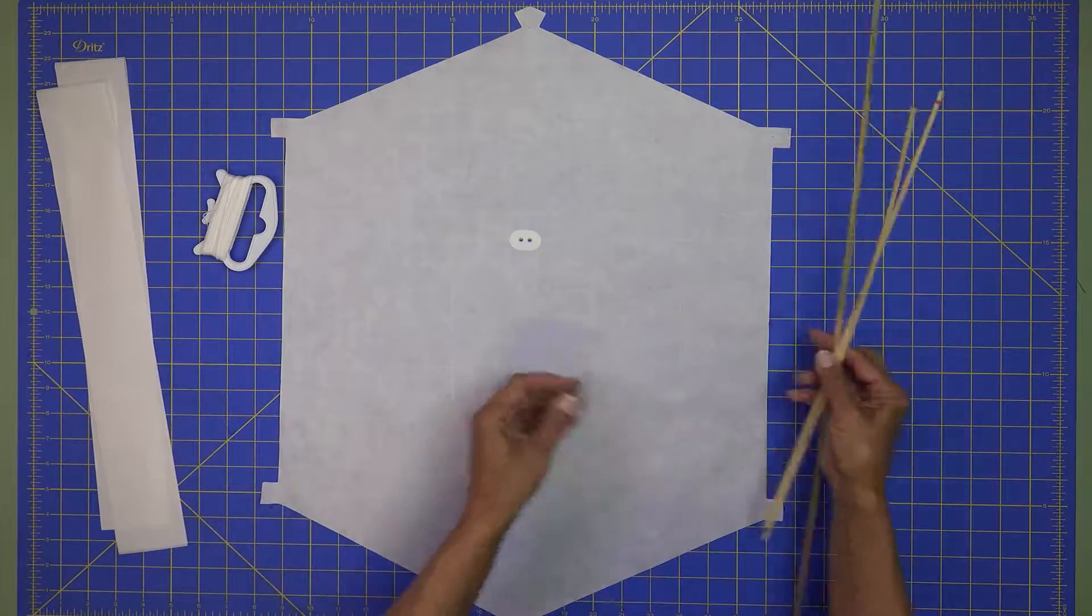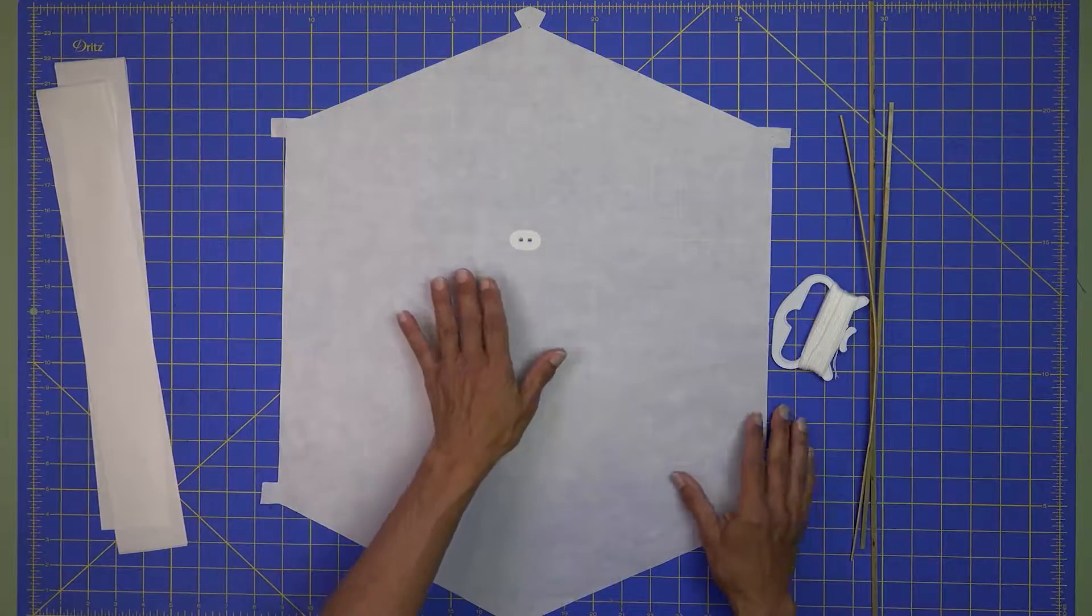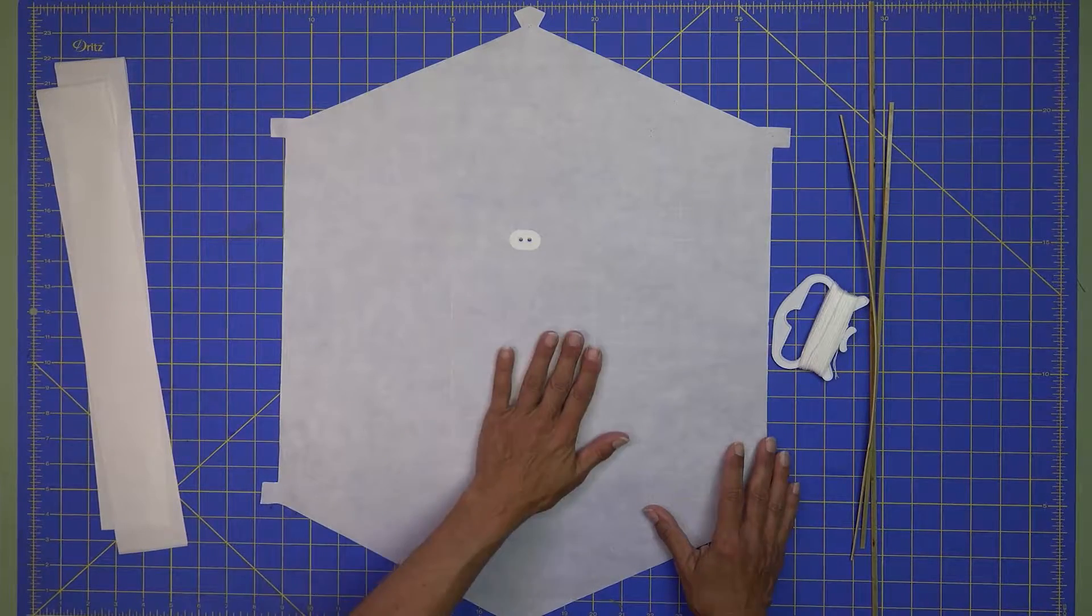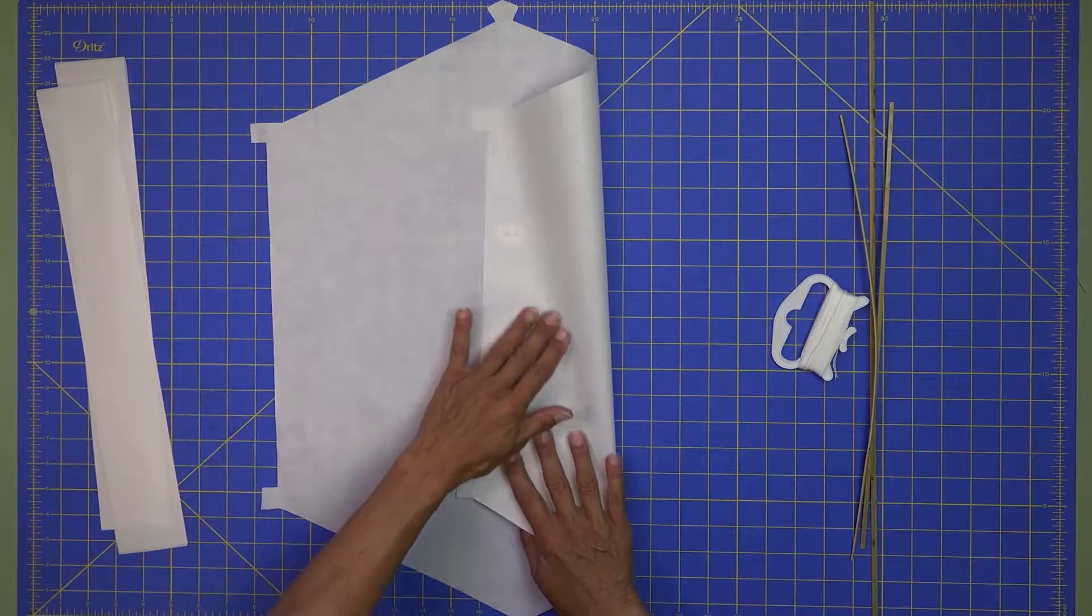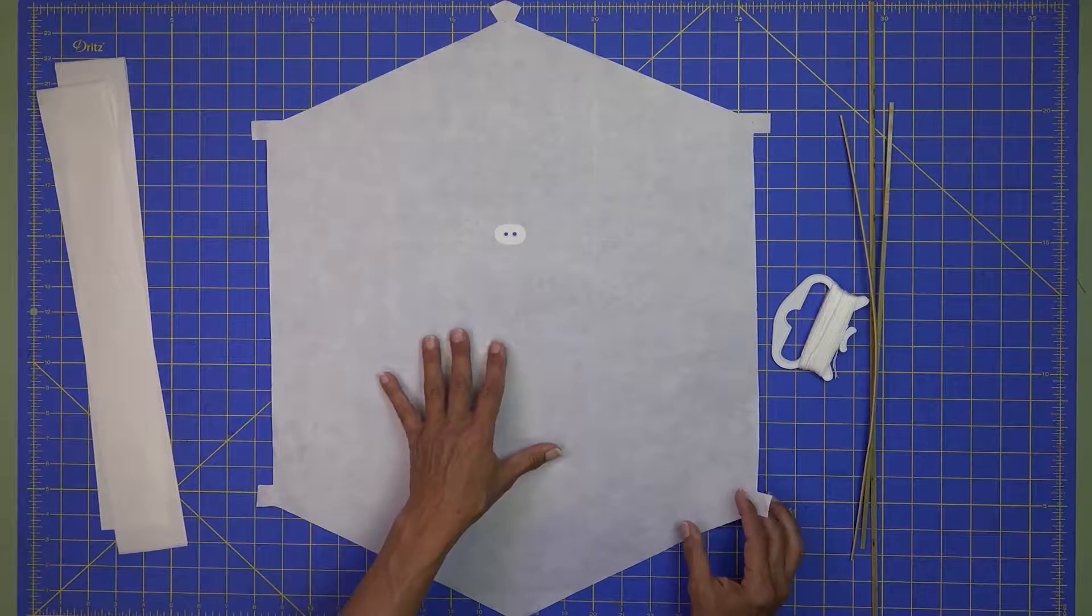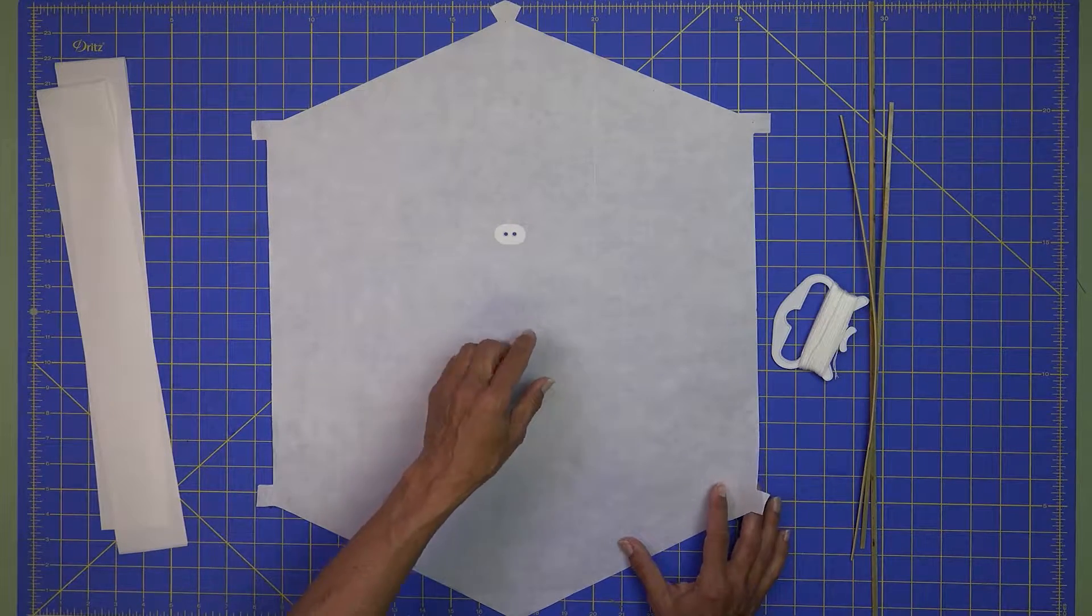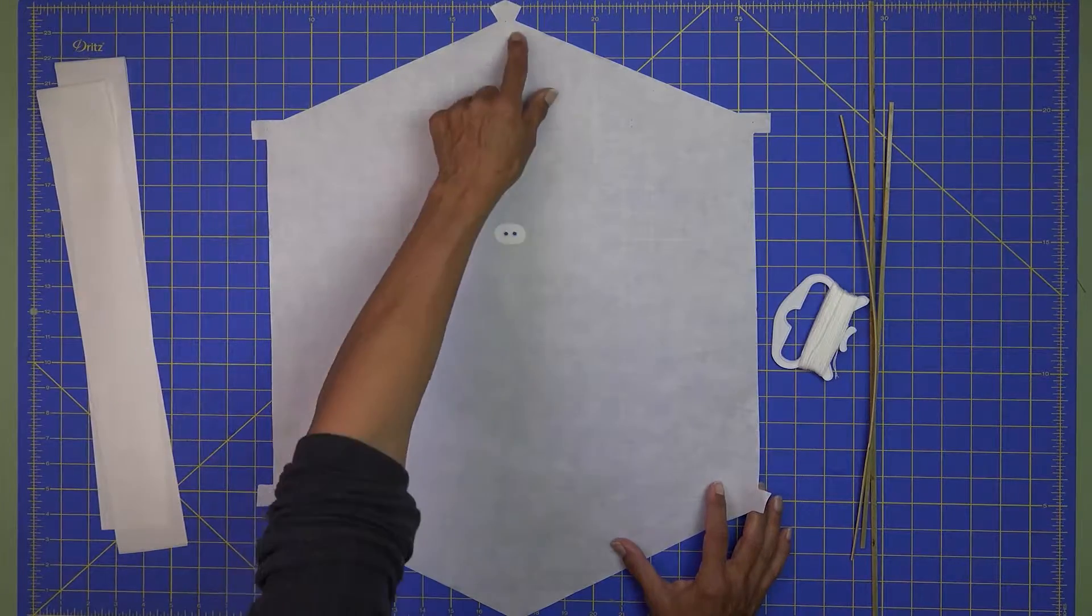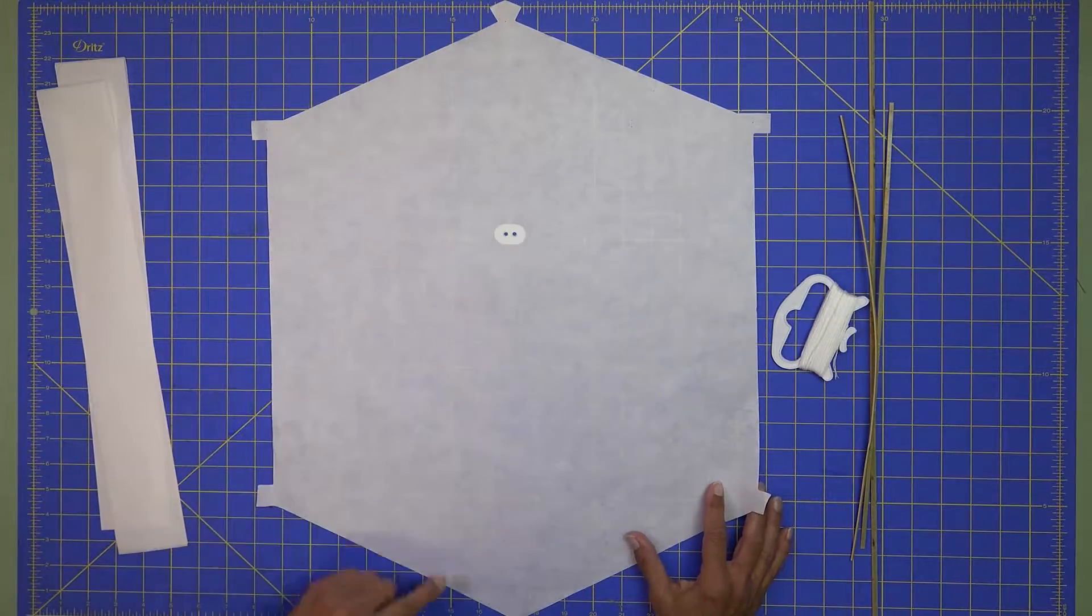The first thing we're going to do is talk a little bit about the sail. You'll notice the washi paper, there's one side that's very smooth and another side that's a little bit rough. They recommend that you decorate on the smooth side, but it really doesn't matter. I want to point out that the top of the kite has a little tab, whereas the bottom does not.